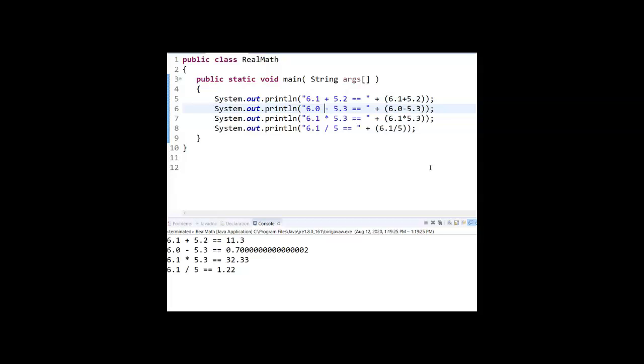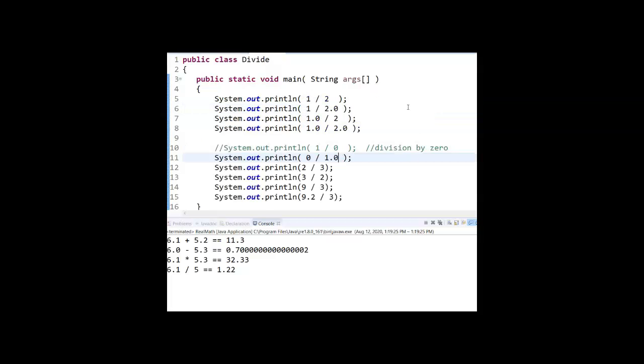When you're doing the division, we have 6.1 divided by 5. Once again, as long as one part, one piece of the equation is a decimal, the result is a decimal. So let's look at division a little bit more closely.